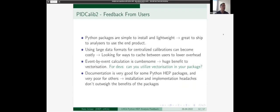The feedback from the PID-calib users: Python packages are simple to install and lightweight. This is great for shipping to analyzers to use the end product. There is some concern using large data formats for centralized calibrations. This can become costly, so people are continuing to look for ways to cache between users to lower the overhead of these large calibrations. What is seen nicely improved with pandas is the event-by-event calculation can become cumbersome, and there's a huge benefit to vectorization. A note for developers: can you continue to utilize vectorization within your package to get these nice improvements? As has been mentioned before, the documentation is very good for some Python HEP packages and very poor for others. Oftentimes the installation and implementation headaches that come with poor documentation don't outweigh the benefit of actually using the packages. This is something to keep in mind as people continue developing this ecosystem.